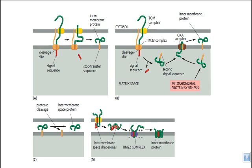In the TIM22 pathway, the protein comes in, attaches to the TOM complex, and is incorporated into the inter-membrane space. Chaperone proteins in the inter-membrane space prevent misfolding. The protein is then taken and embedded through the TIM22 complex, which has a translocation channel. Throughout the TIM22 channel, the protein molecule is dragged into the inner membrane of mitochondria, and this process is facilitated by the membrane potential.